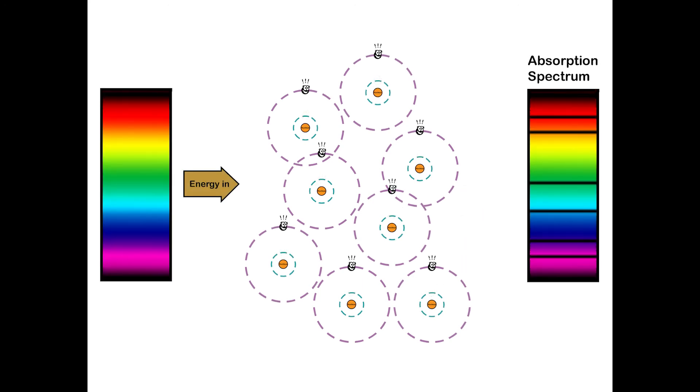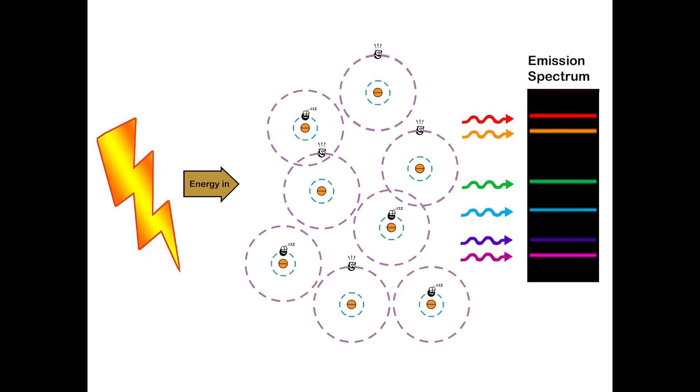So to recap, when you shine light into a gas and it absorbs wavelengths, you call that an absorption spectrum. So you would see the full rainbow with dark lines at the wavelengths that the gas absorbed. When you excite the gas some other way and it emits light, you call that an emission spectrum. And again, the gas will only emit light at certain wavelengths.